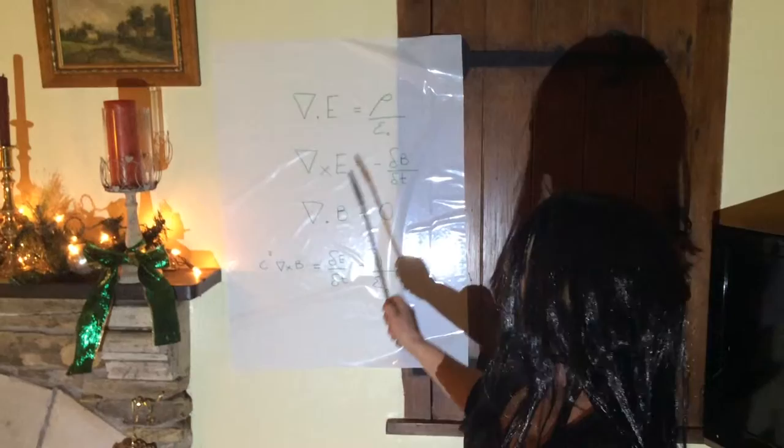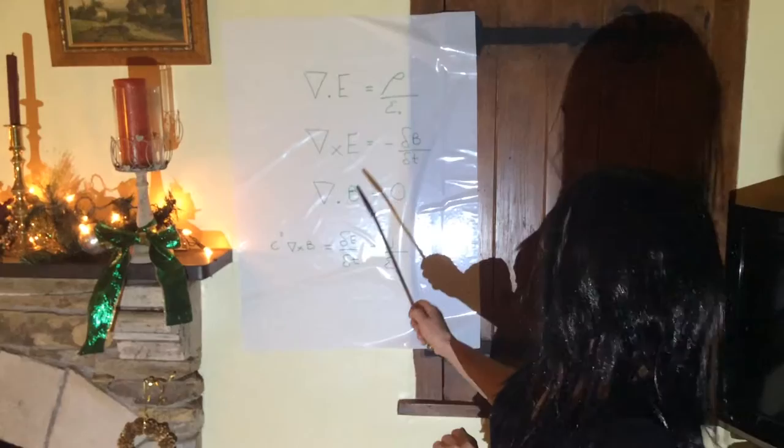Del cross E equals a simple derivative minus dB dt. And the next one is sad, but it's easy to sing. Our poor little del B ain't worth anything.